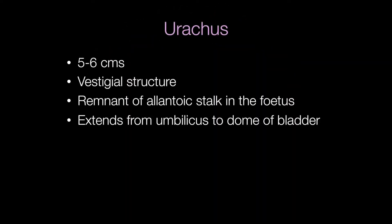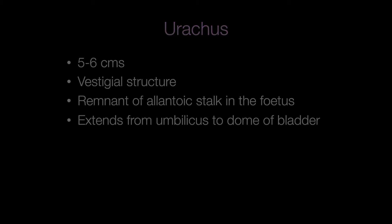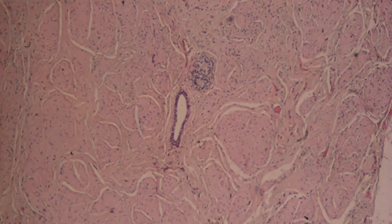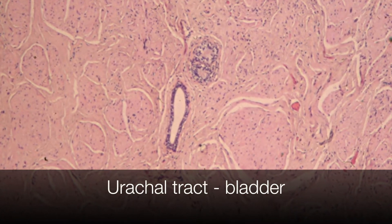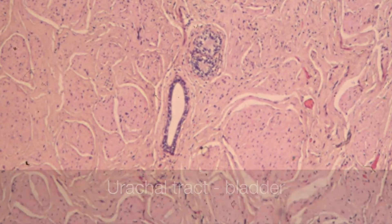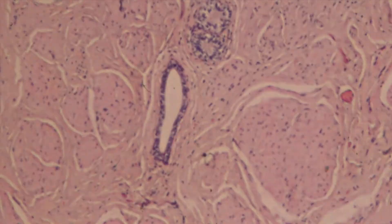The urachus is the remnant of the allantoic stalk arising in the foetus. It is five to six centimetres long and extends from the umbilicus to the dome of the bladder. At the centre of this picture is a remnant of the urachal tract in the bladder wall.